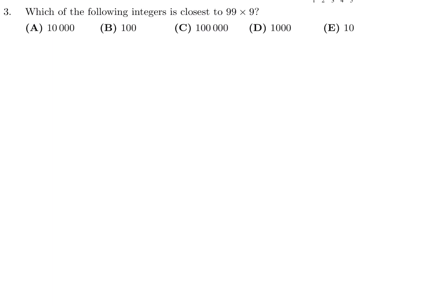Which of the following integers is closest to 99 times 9? Well, 99 times 9 is 891. And of the answer choices, the one that 891 is closest to is 1000. So number 3, the answer is D.